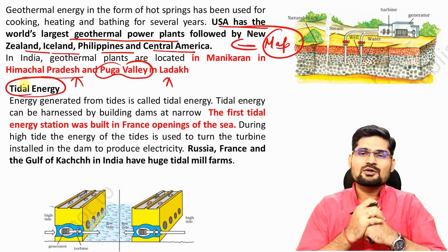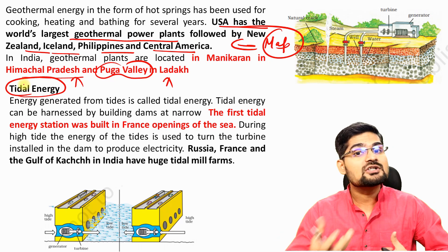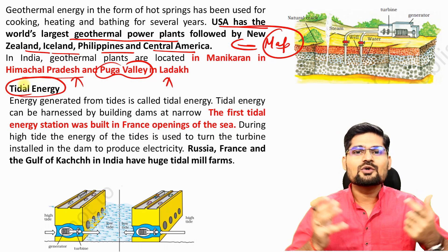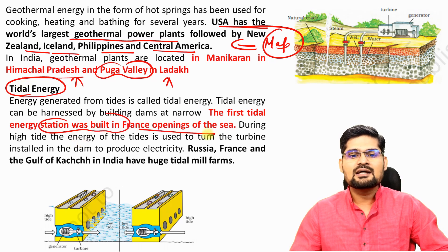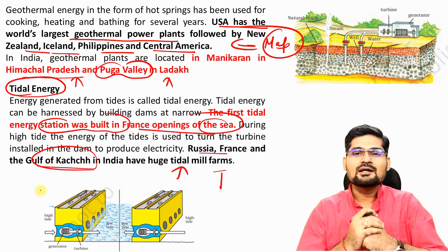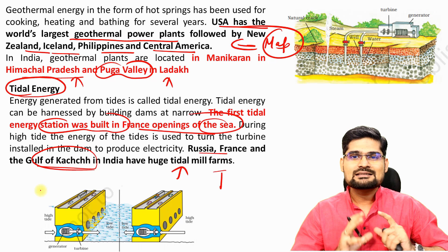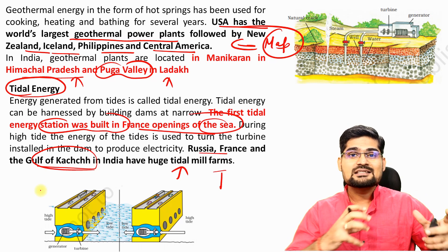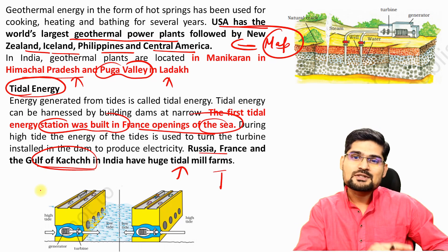Tidal energy harnesses the huge potential of ocean tides and is a significant resource, though it remains largely unharnessed. India, as a peninsular country with long coastlines, has strong potential for tidal energy. The first tidal energy station was built in France. Russia, France, and the Gulf of Kutch in India also have tidal mill farms. It is important to understand the world energy resources pattern, the difference between renewable and non-renewable sources, and how to move from an energy crisis to a surplus.